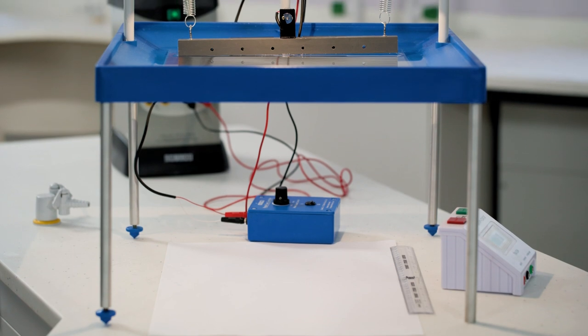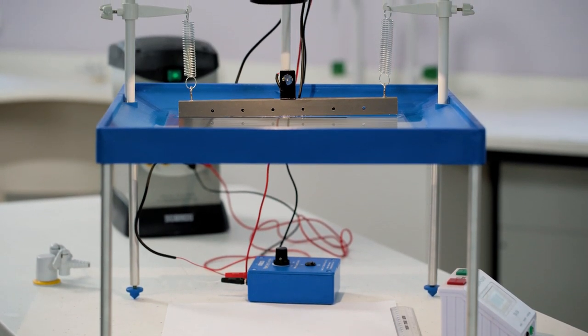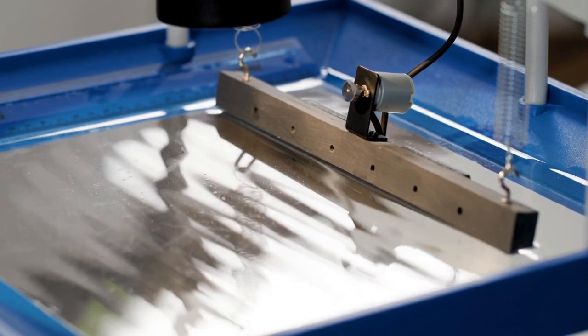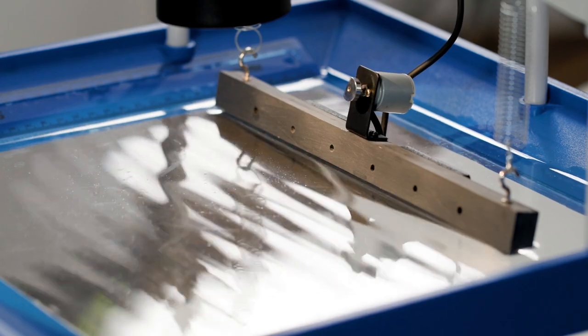Firstly, set up a ripple tank with a straight dipper parallel to one of the short sides of the tank. This allows you a longer length so you have the ability to measure more waves.